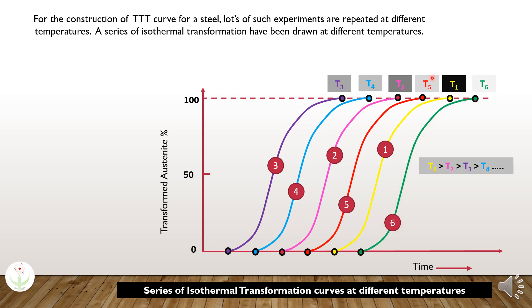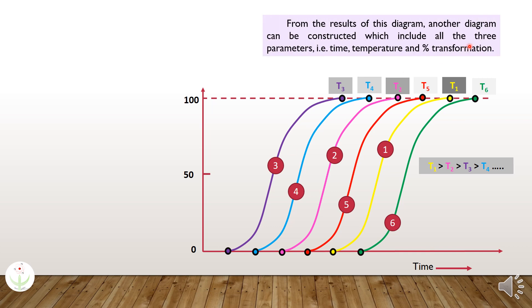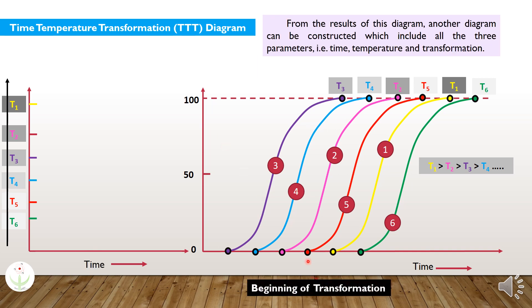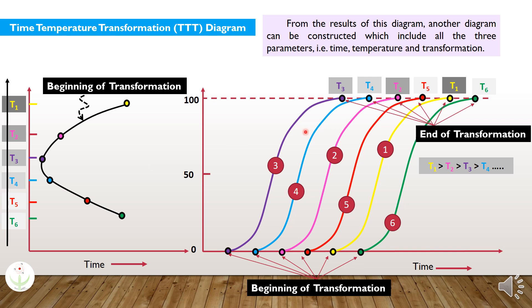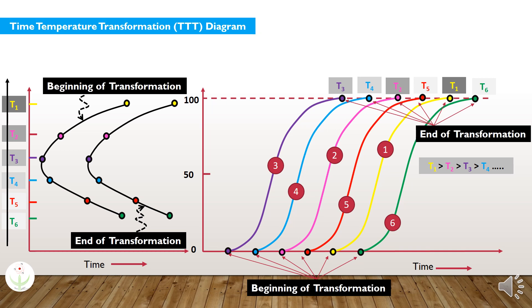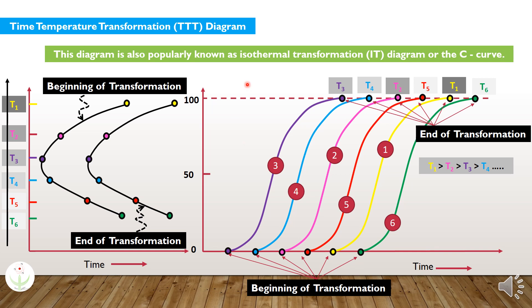Here, temperature T1 is greater than T2, which is greater than T3, and so on. From the results of this diagram, another diagram can be constructed which includes all three parameters: time, temperature, and transformation. The points indicating the beginning of transformation, when drawn on the time-temperature transformation diagram, form a line indicating the beginning of transformation. This diagram is known as the time-temperature transformation diagram, also popularly known as the isothermal transformation diagram or the TTT curve.